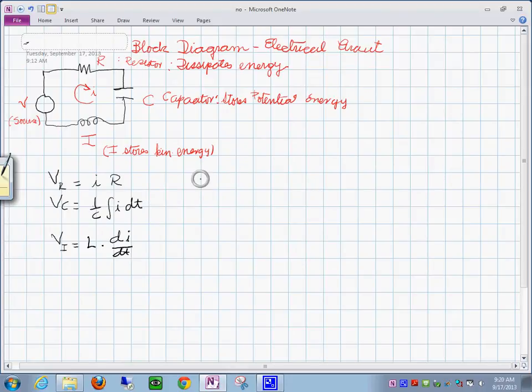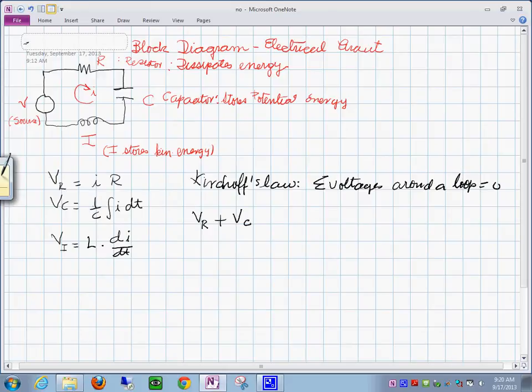So you could say, we need to apply Kirchhoff's law. It says the summation of the voltages around a loop equals to zero. So if this is true, you will have that voltage V sub R plus voltage V sub C plus voltage V sub L is going to be equal to the voltage, minus the input voltage minus V in equals to zero.